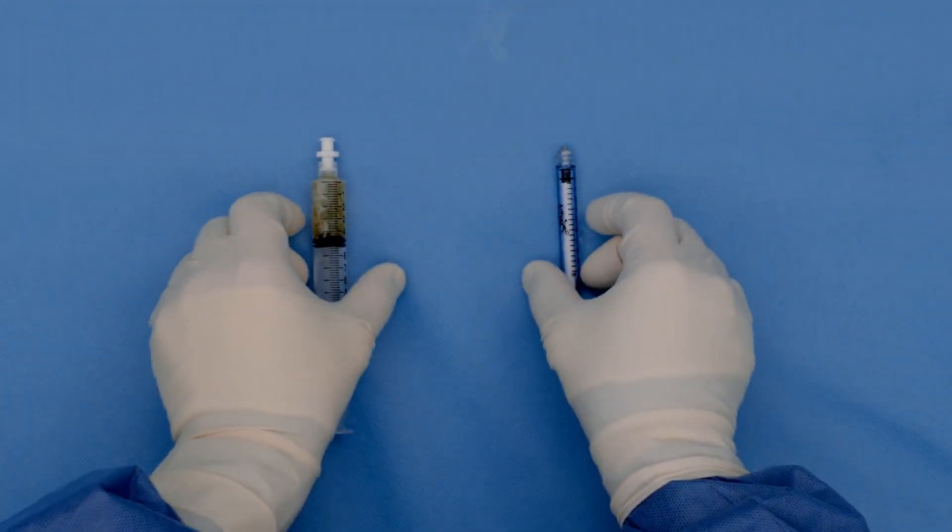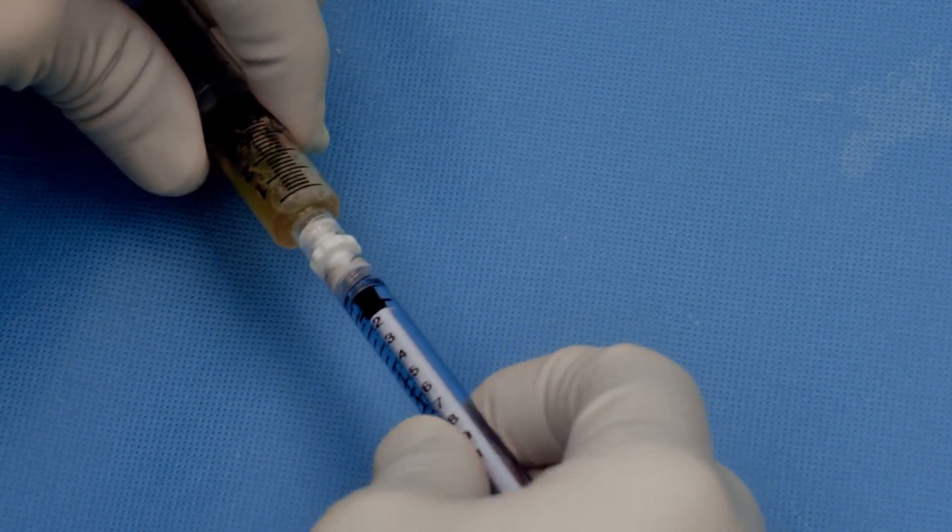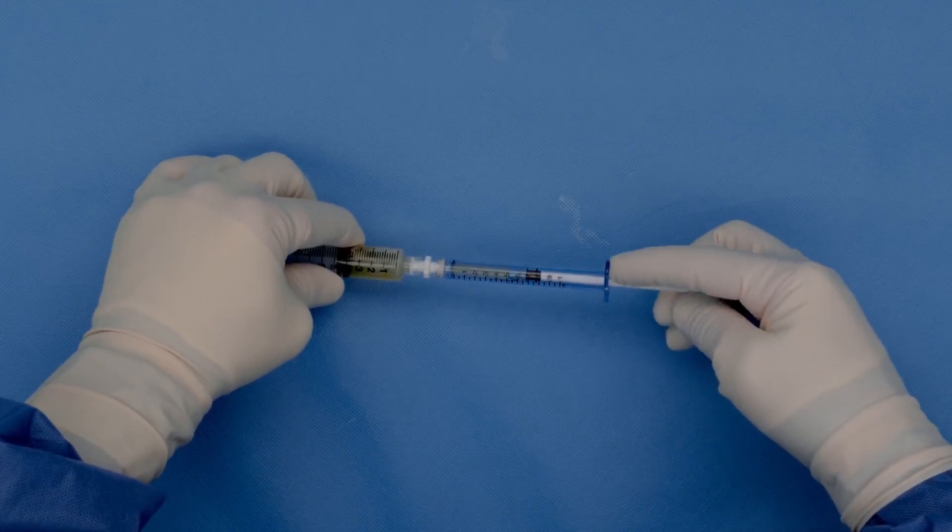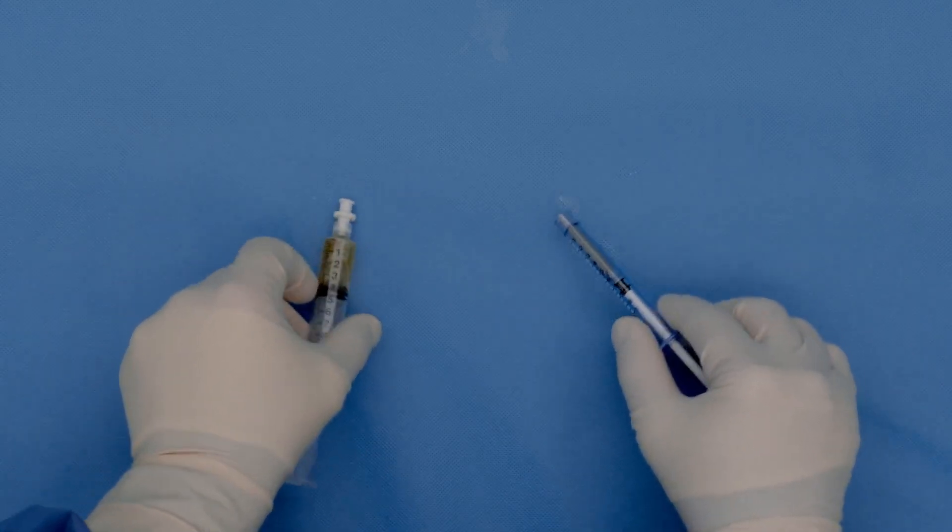In the next step, you transfer 0.5 ml of the autologous thrombin into a smaller syringe. And your final product is ready for application.